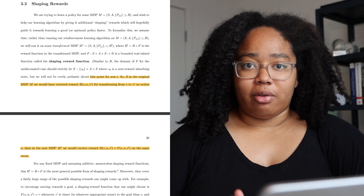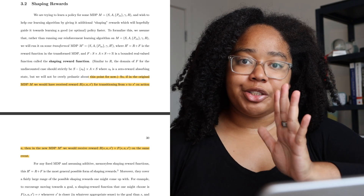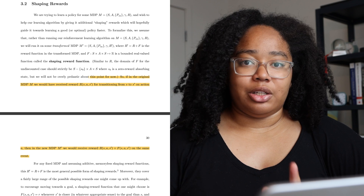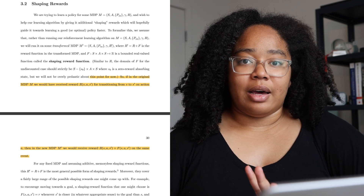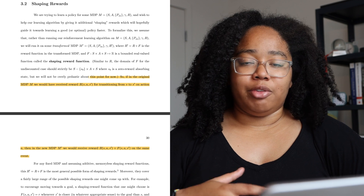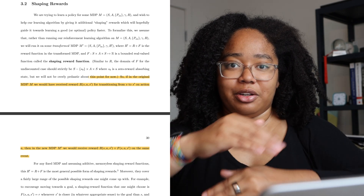The idea is that we already have a reward function in our MDP, and we can add a separate function that disincentivizes certain types of actions. In the bicycle example, we might add an extra formula that disincentivizes riding in circles by giving a negative reward for moving in a circular manner. He goes through a bunch of formal proofs of how you can use shaping to make a better reward function that improves the outcomes of your reinforcement learning model.